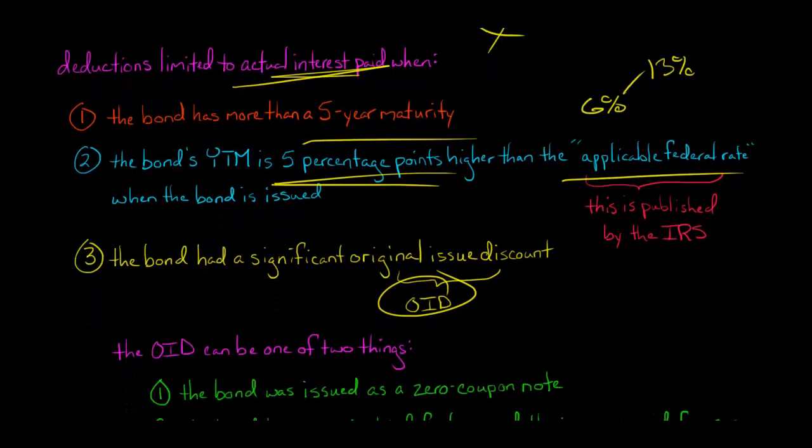The simple scenario where there's an original issue discount is you just have a zero coupon note. A zero coupon note is something where the issuer says, listen, we're trying to raise money and we would like to, we promise to pay you, the investor, we promise to pay the investor $500,000.